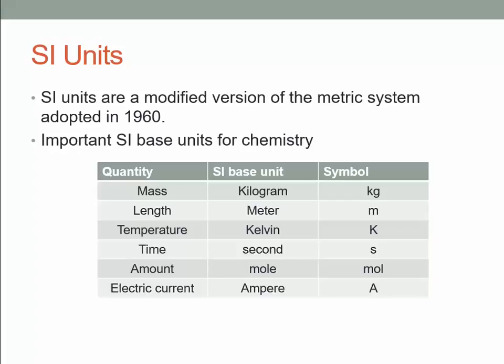There are some units established as base units — these can be used to measure everything else. The SI base unit for mass is the kilogram. There is actually a cylinder of metal that serves as the standard kilogram. The gram isn't used because it's a tiny amount of mass. For length, the base unit is the meter — originally defined by a metal stick, now defined by the distance light travels in a certain amount of time.